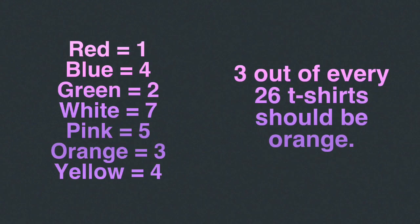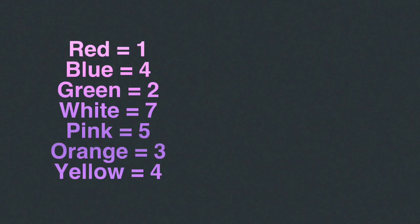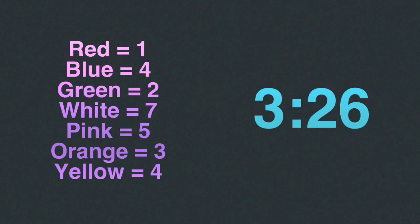Finally, what about this ratio relationship: three out of every 26 t-shirts should be orange. That ratio would look like this: three to 26. Three out of every 26 t-shirts should be orange.